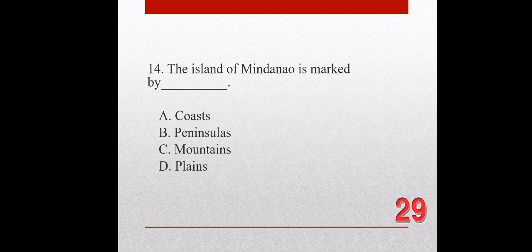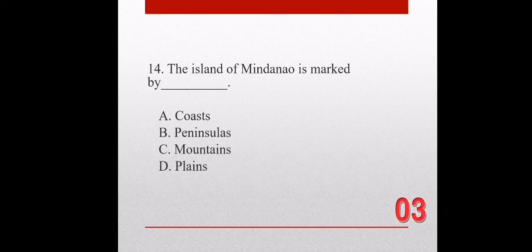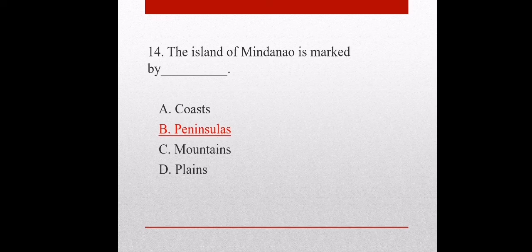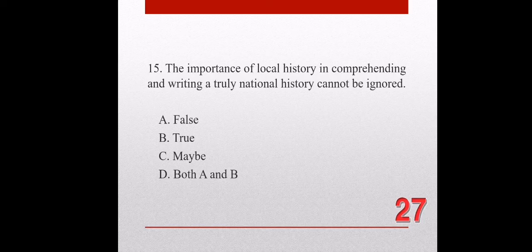Question number fourteen. The island of Mindanao is marked by blank. A. Coasts. B. Peninsulas. C. Mountains. D. Plains. The correct answer is letter B, Peninsulas.